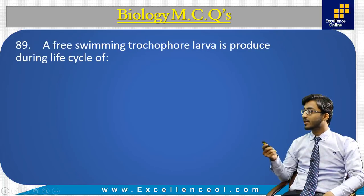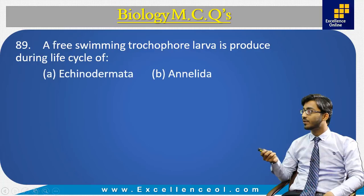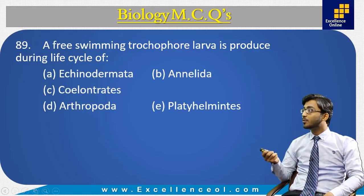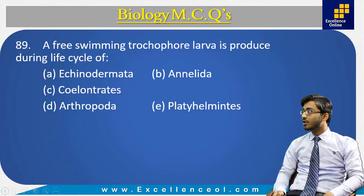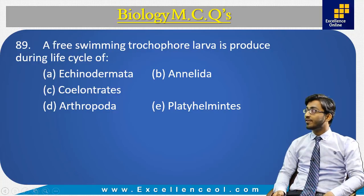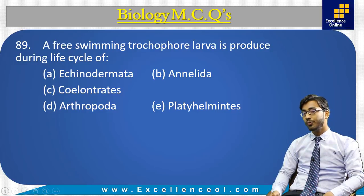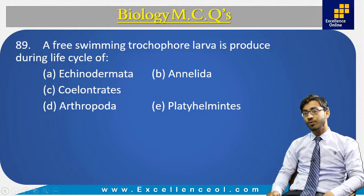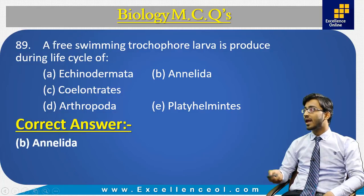Next MCQ 89: free-swimming trochophore larva is produced during the life cycle of: Option A echinodermata, Option B annelida, Option C coelenterata, Option D arthropoda, and Option E platyhelminthes. According to the book, the annelida life cycle produces the free-swimming trochophore larva. So our answer is B: annelida.